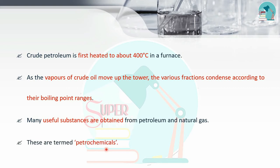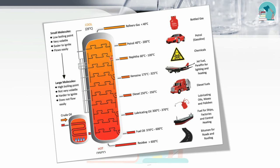In the fractionating furnace, the crude oil is heated and vapors rise in the tower. At different boiling points, fractions are collected. Refinery gas is collected at up to 40°C, petrol at 40–205°C, naphtha at 60–100°C, kerosene at 175–325°C, diesel at 250–350°C, lubricating oil at 300–370°C, fuel oil at 370–600°C, and residue at greater than 600°C. Different products have different boiling point temperature ranges.